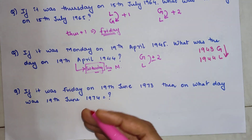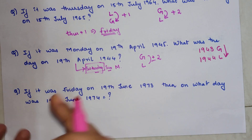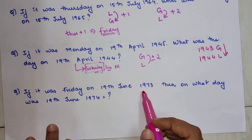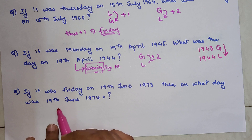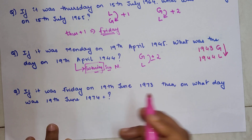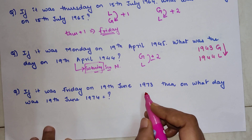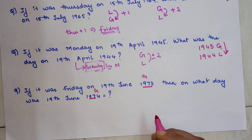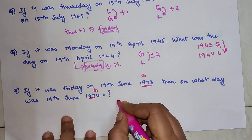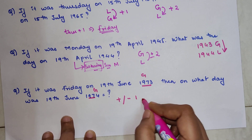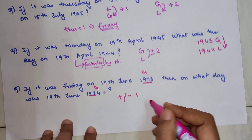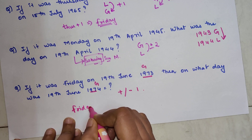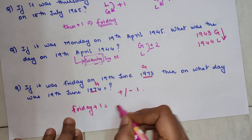Now you might be wondering what happens when it is a general-to-general year. For example: if it was Friday on 19th June 1973, what day would it be on 19th June 1974? Both of these years are general years. Whenever you have general to general, you simply add or subtract 1. Since we are going ahead, the answer is Friday plus 1, which is Saturday.